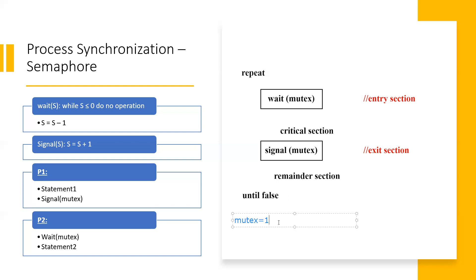It depends on the process. We will discuss two different processes. The semaphore variable's value determines access: if the value is zero, the critical section is already occupied; and if it is one, the critical section is available for any process.